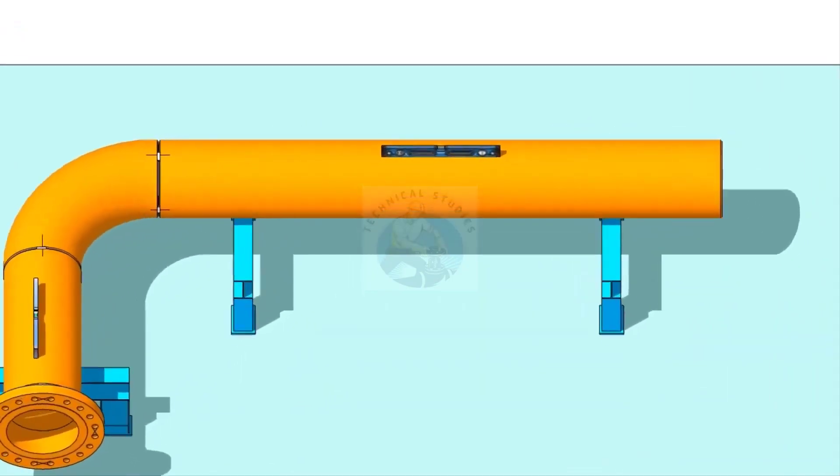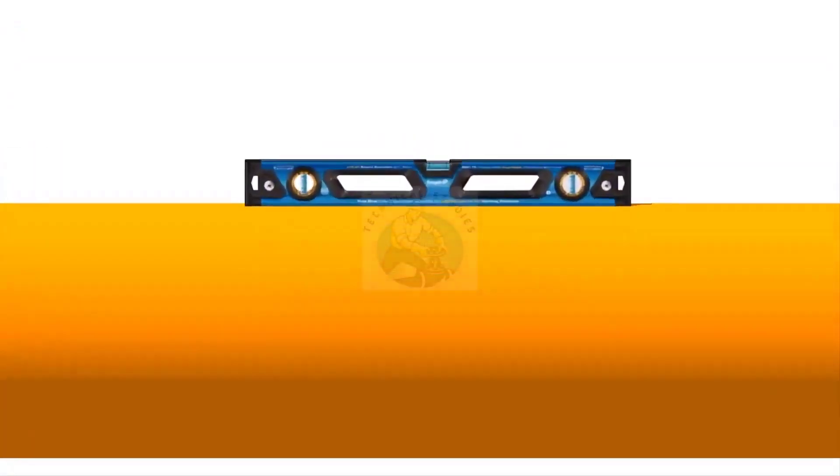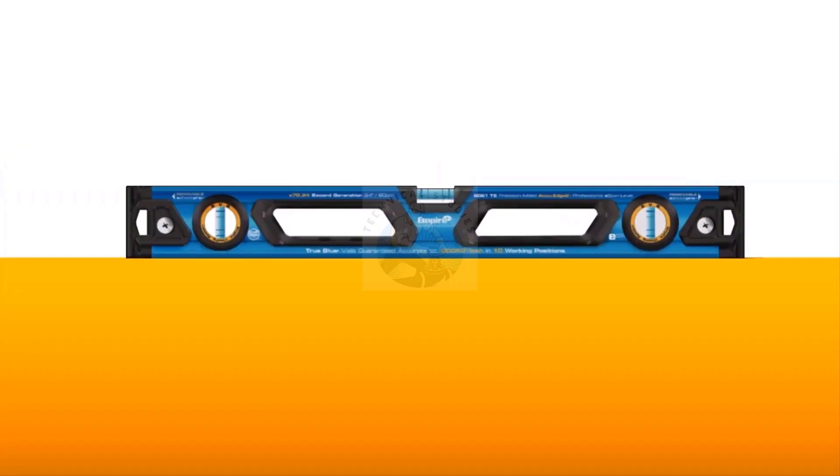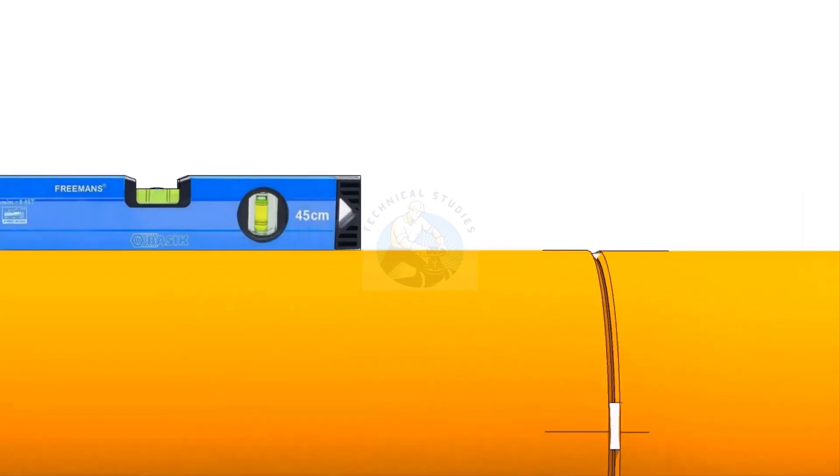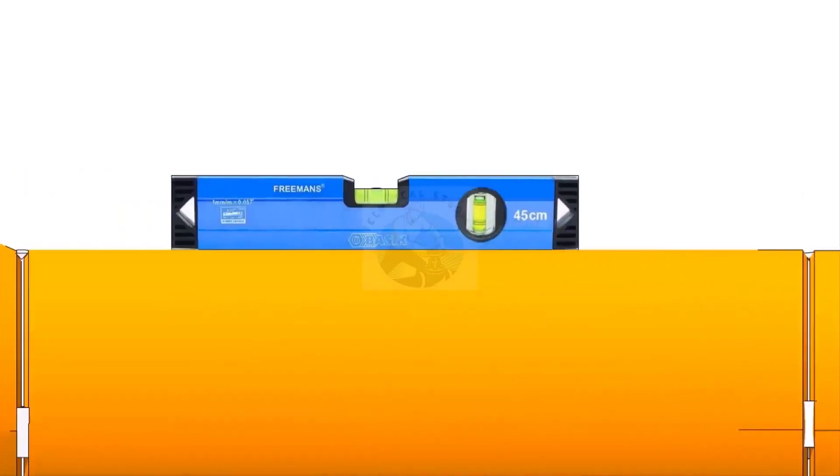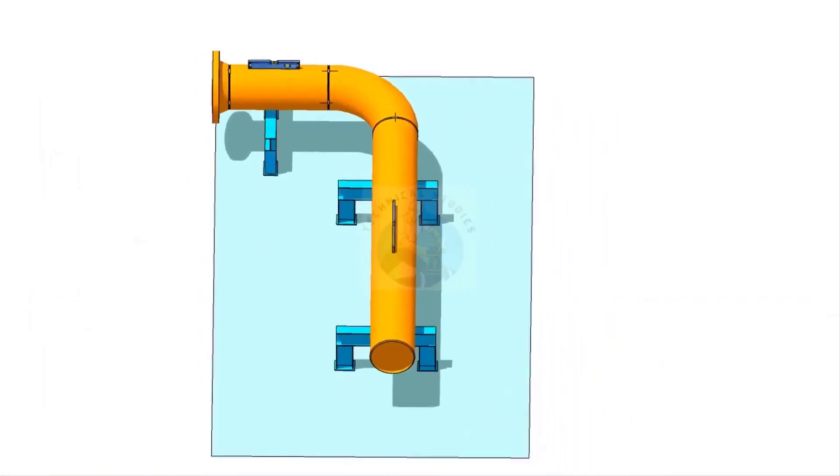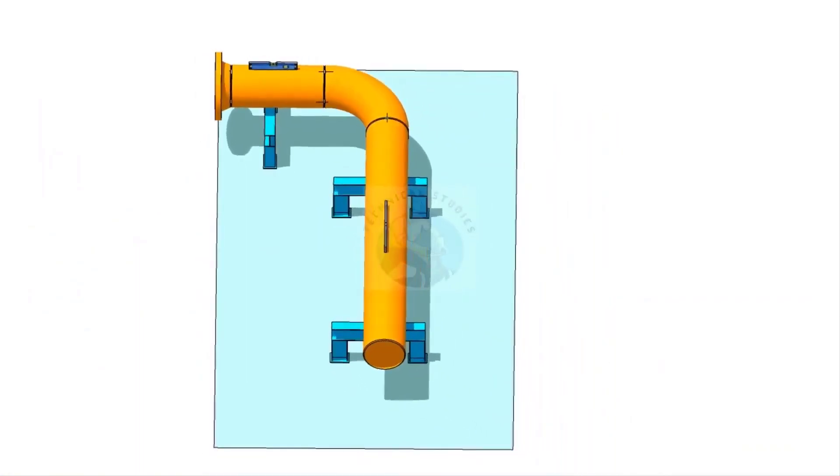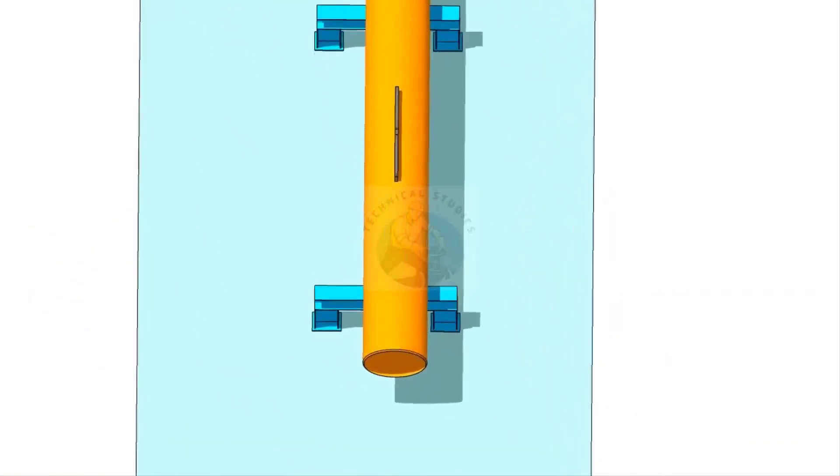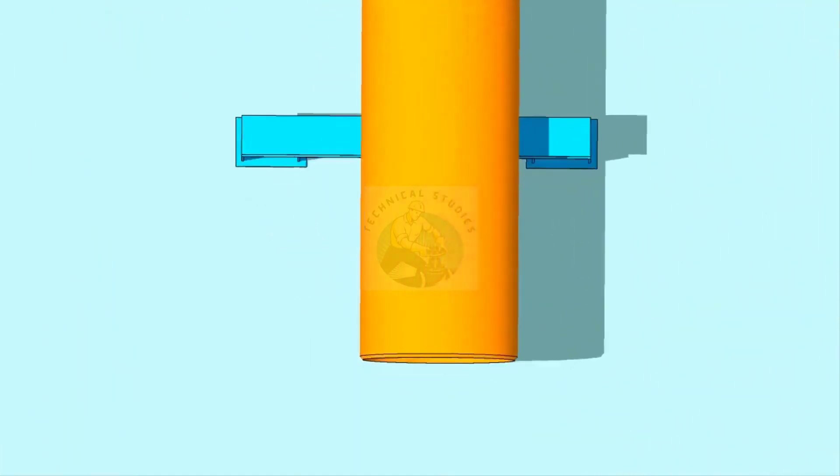Now go to the existing spool, check the level, and correct it. Mark the 0 degree.